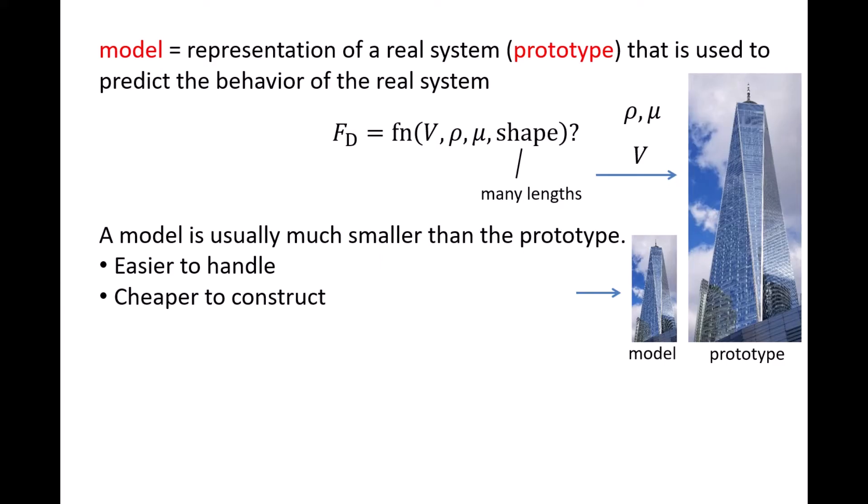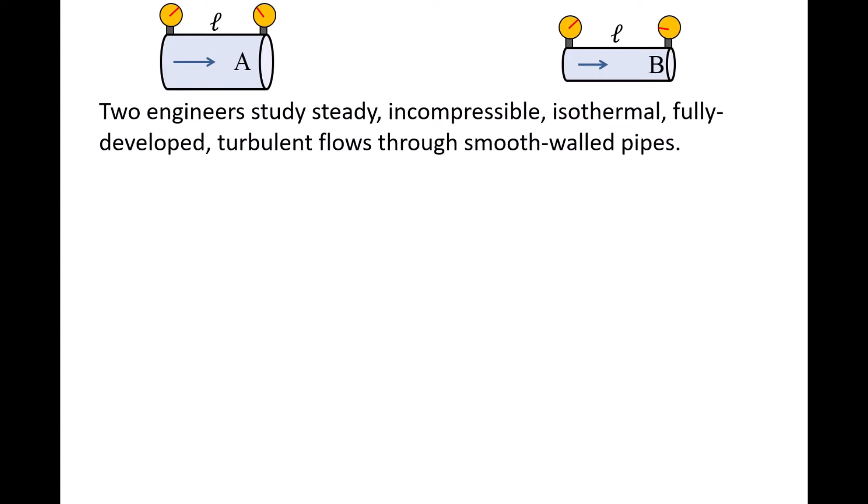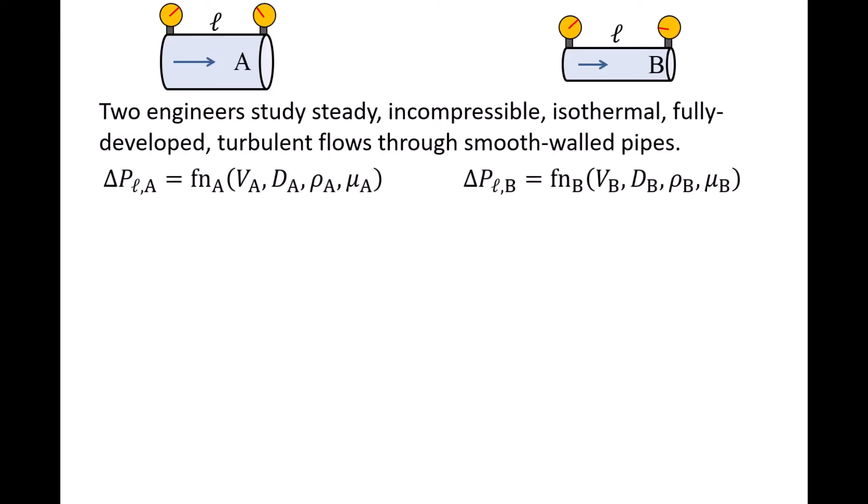But how can we ensure the results from experiments conducted on a model will accurately predict the behavior of the prototype? We can answer that question by examining the following fictional scenario. Let's say there are two engineers who are studying the same problem but working completely independently of each other. They're both trying to find an expression for the pressure drop per length of pipe for a smooth-walled pipe experiencing steady, incompressible, isothermal, fully developed turbulent flow. The first engineer is studying this using system A, and the second engineer is studying this using system B. Both engineers correctly deduce that delta PL is some unknown function of flow speed V, pipe diameter d, fluid density rho, and absolute viscosity mu, using subscript a for system A and subscript b for system B.